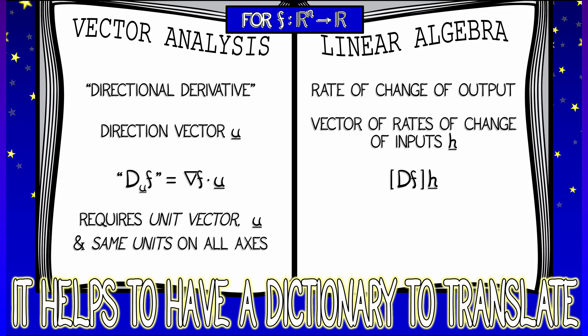For a directional derivative, you've got to have a unit vector. You've got to have the same units on all your axes, whereas in linear algebra, look, you can build that into the linear transformation. It's indifferent to lengths and units. Much more adaptable.